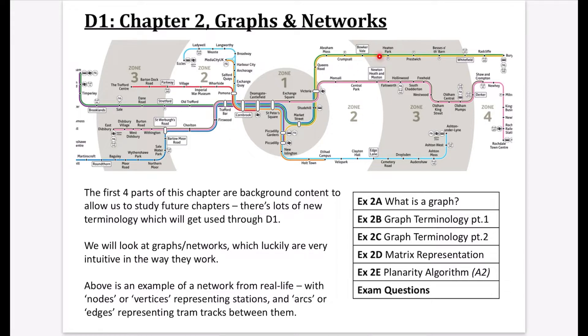Above here, I've got an example of a network from real life with nodes or vertices representing the different stations and arcs or edges representing tram tracks that are in between them. The way I've said that they're very intuitive in the way that they work is that we kind of see them all around us. They're just kind of used as visual representations of things that are connected together and reasons we might be moving between them.